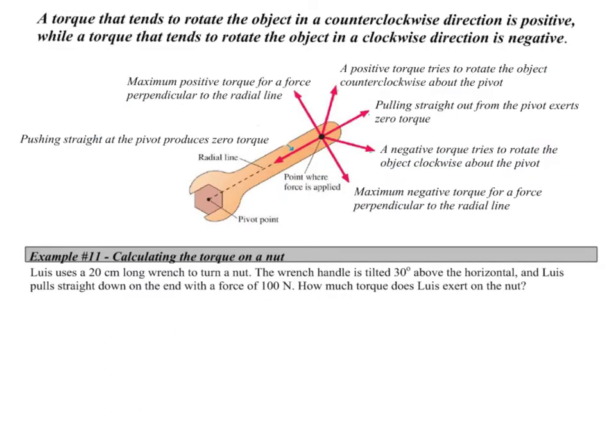Torque differs from force in an important way: torque is measured about a particular point of rotation. To say a torque is 20 newton meters is meaningless without specifying the point around which it is calculated. A torque can be calculated around any point, but its value depends on the point chosen because that choice determines the lever arm and the angle. In practice, we usually calculate torques around a hinge, pivot, or axle.